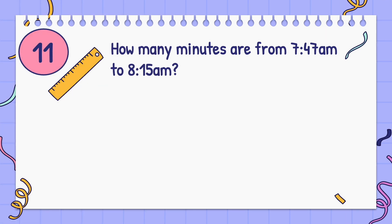How many minutes are from 7:47 am to 8:15 am? Answer: 18 minutes.